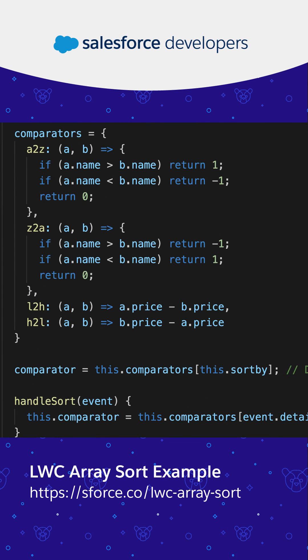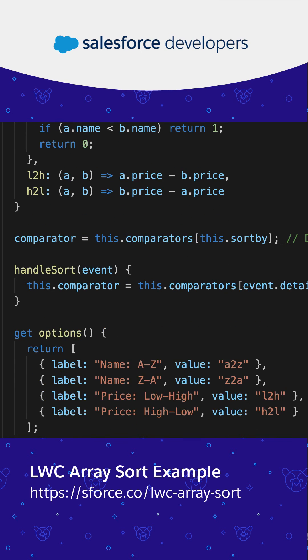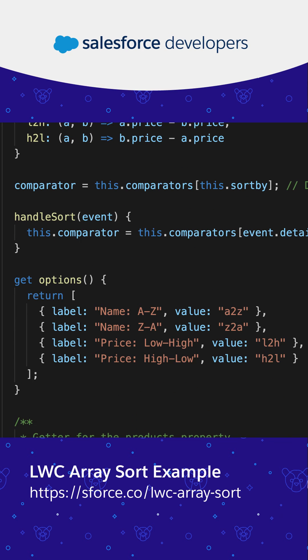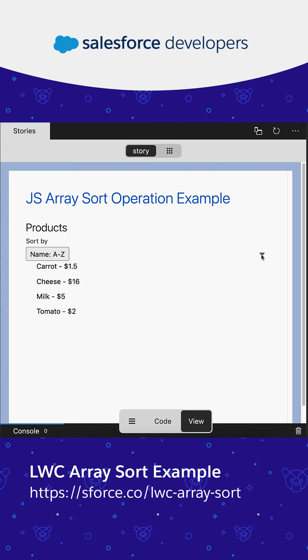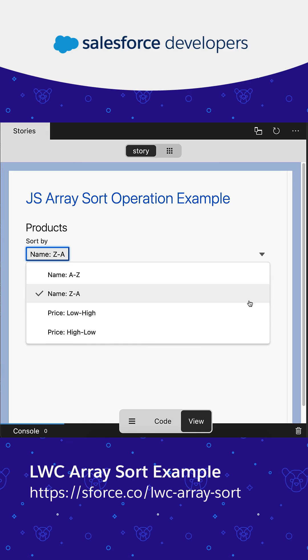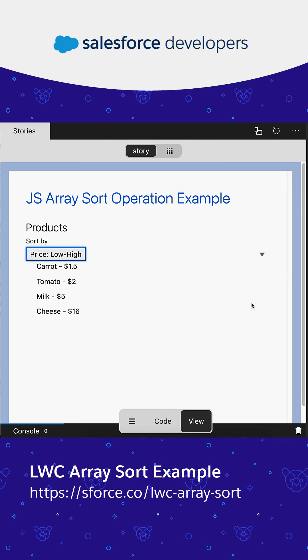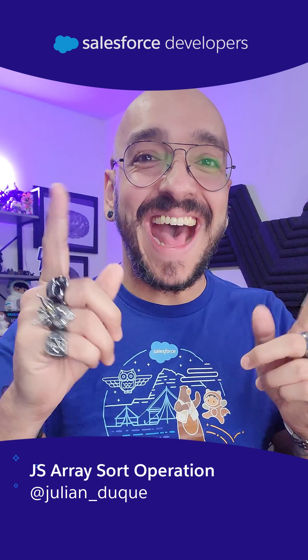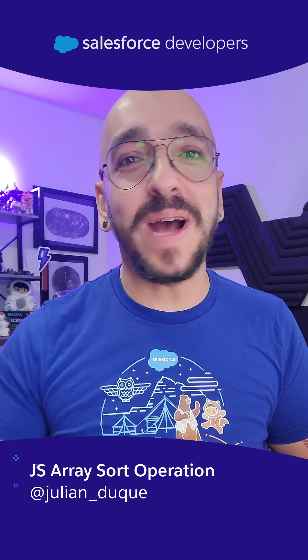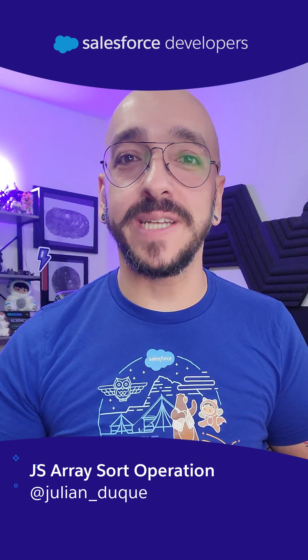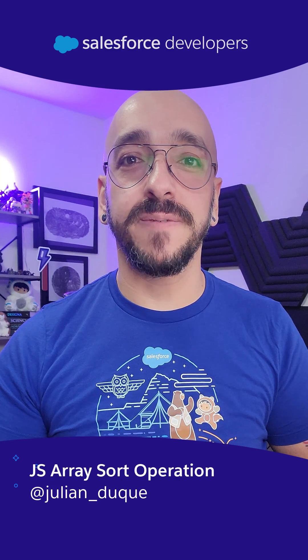In this LWC example, we are using multiple comparator functions to sort a list of products by name and price. And that's how you do a JavaScript array sort operation in LWC.